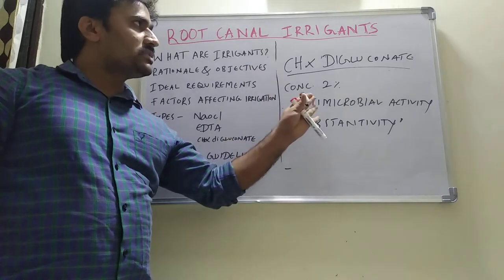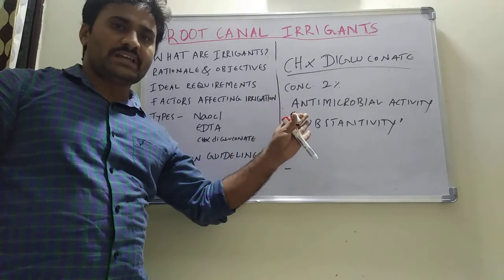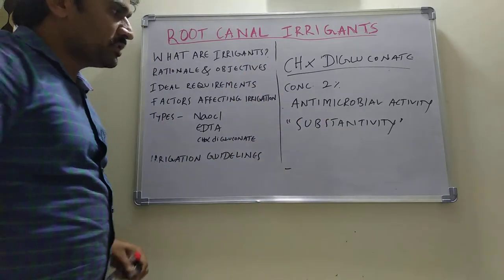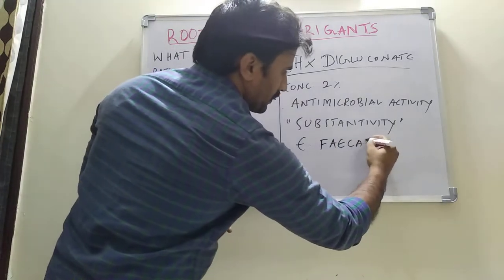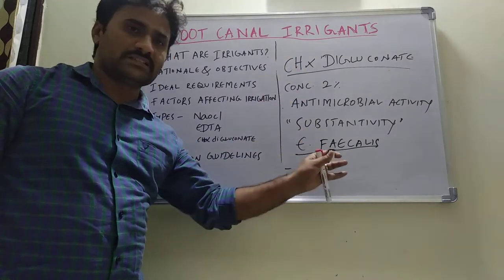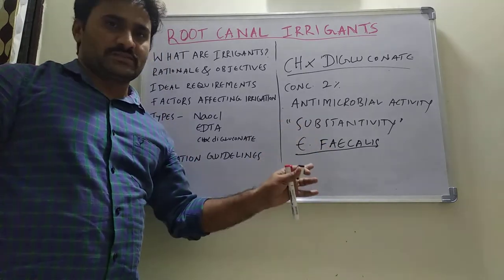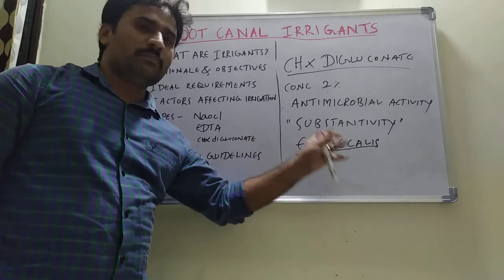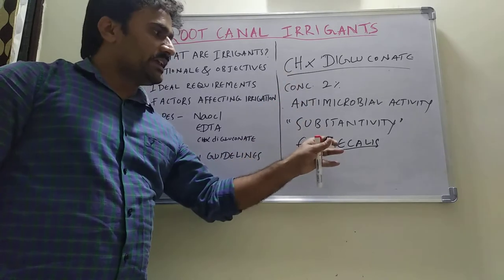Chlorhexidine digluconate is mainly used as an irrigant due to its broad spectrum antimicrobial activity. It acts as both bacteriostatic and bactericidal. Importantly, it is effective against Enterococcus faecalis — one of the main microorganisms found in failed root canal cases. When root canal treated cases fail, Enterococcus faecalis is the main culprit.